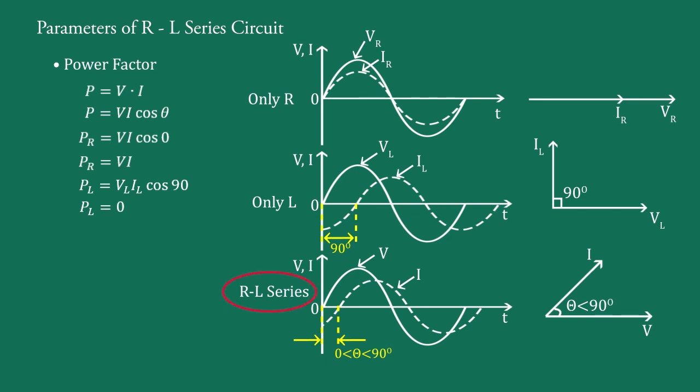In the third case, that is series RL circuit, power P equals V into I cos theta. In these terms, cosine factor is known as power factor, that is power factor equals cos theta.